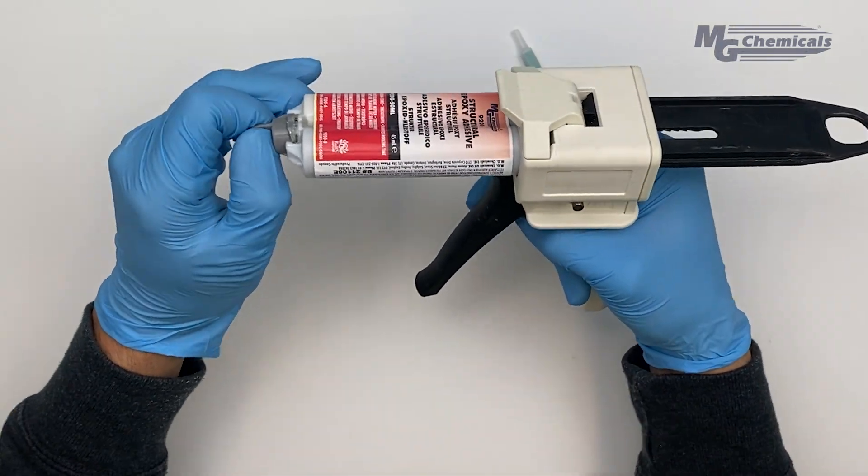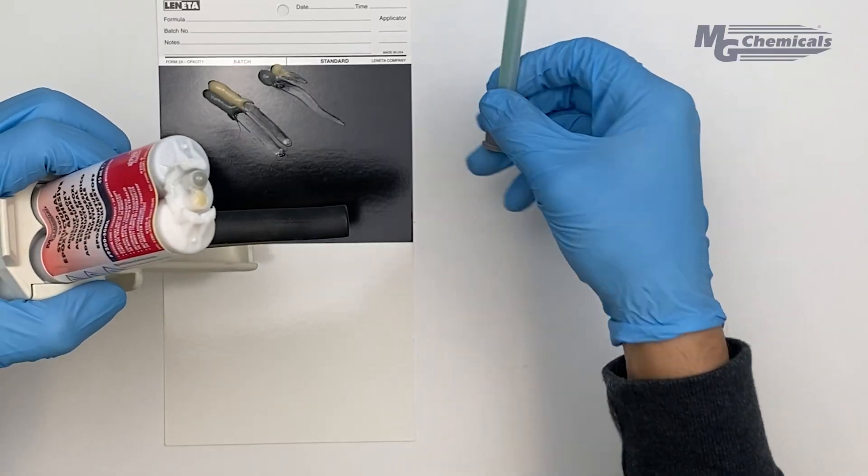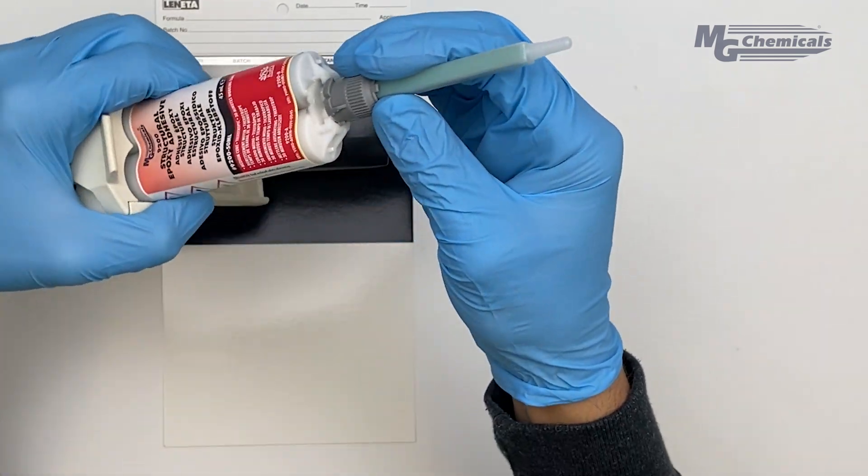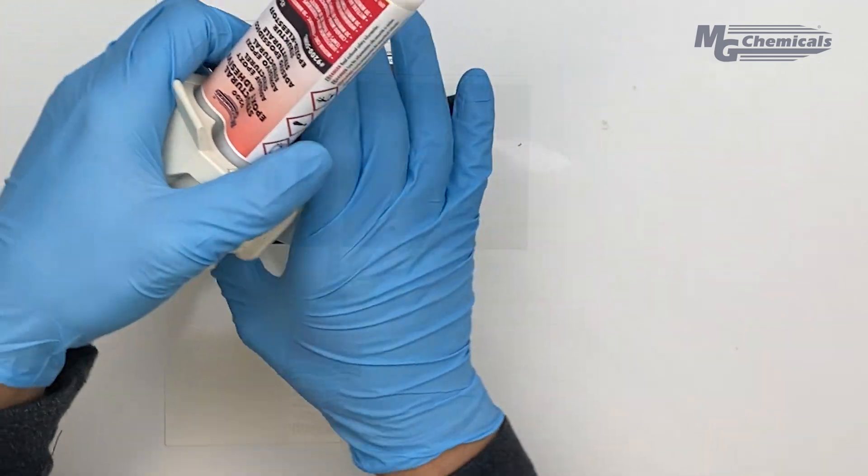Next let's look at using a mixing nozzle instead of manual mix. Insert the nozzle by lining up the notch on the nozzle with the indent on the cartridge and twisting 180 degrees clockwise.